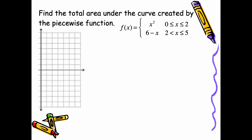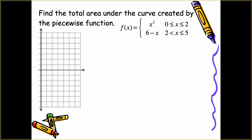Here it says: find the total area under the curve created by the piecewise function, where f of x equals x squared for 0 ≤ x ≤ 2, and 6 minus x for 2 < x ≤ 5. We have a parabola from 0 to 2; at x equals 2 the value is 4. Then we go down from 2 to 5 with 6 minus x: at x equals 2 it's 4 again, and at x equals 5 it's 1. This area is entirely above the x-axis — all positive area — so we evaluate the integral in two parts: the integral from 0 to 2 of x squared dx, plus the integral from 2 to 5 of (6 minus x) dx.